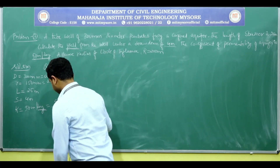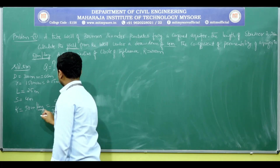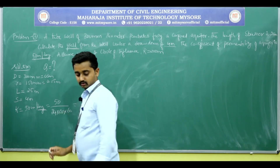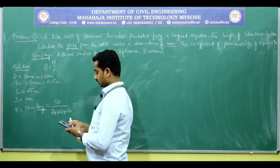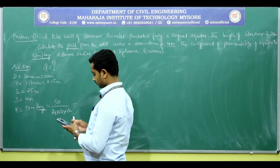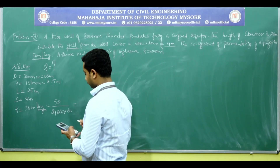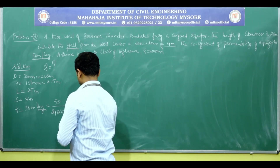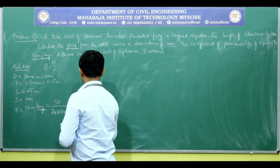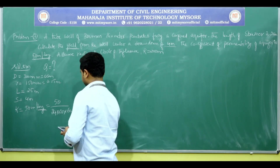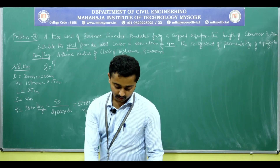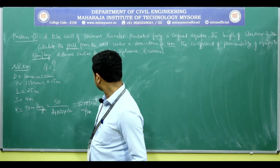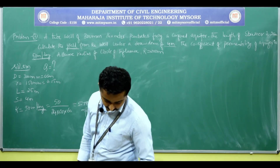Coefficient of permeability K equals 50 meters per day. Convert this to meters per second: one day is 24 hours, one hour is 60 minutes, one minute is 60 seconds. So 50 divided by (24 × 60 × 60) gives 5.787 × 10⁻⁴ meters per second.